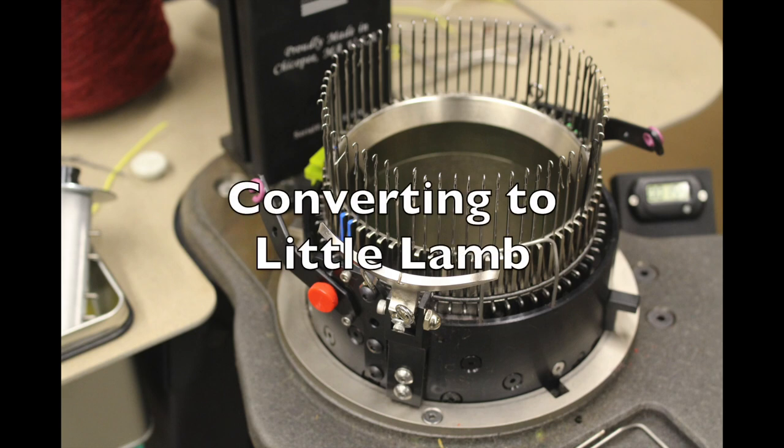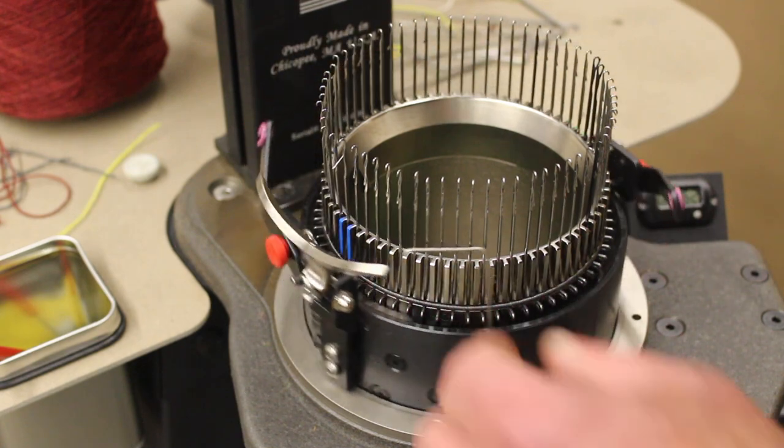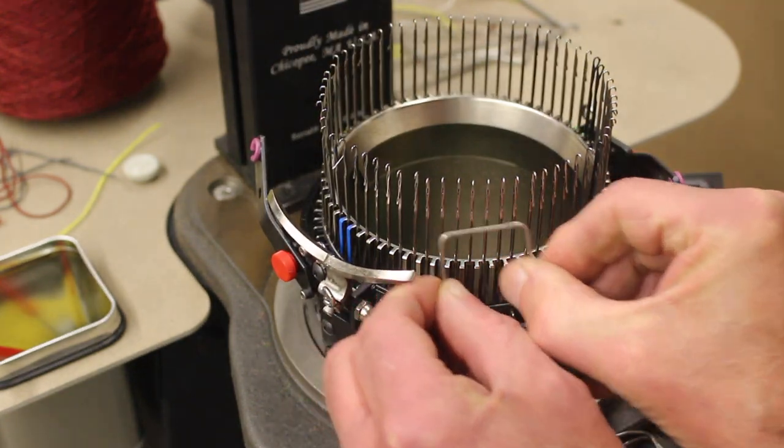Let's see how simple the changeover is from the standard LT150 to the Little Lamb attachment. First, remove the cylinder and cam shell assemblies from the LT150. Raise all the needles up or remove them from the cylinder—your choice.